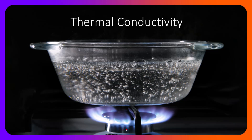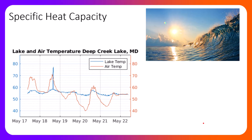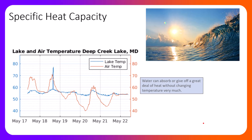Thermal conductivity is how much energy a medium can absorb. Water can absorb a lot more energy than air and withstand temperature change, meaning it is a lot easier for air to heat up than water. It doesn't take as much energy to heat the air as it does water. This also applies to high specific heat capacity, which is the amount of energy a medium like water can absorb without changing much ambient temperature. If we look at this particular data from May 17th to May 22nd, you can see two lines: a blue line indicating lake temperature and an orange or brown line which is the air temperature.